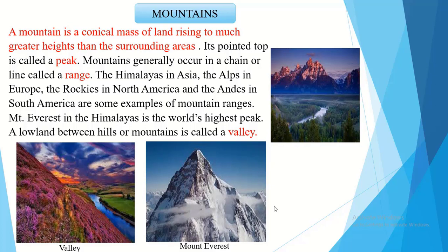The Himalayas in Asia, the Alps in Europe, the Rockies in North America and the Andes in South America are some examples of mountain ranges. Mount Everest in the Himalayas is the world's highest peak. A small mountain is called a hill. Generally hills have rounded tops. A lowland between hills or mountains is called a valley.